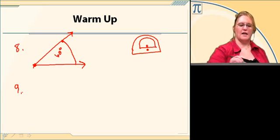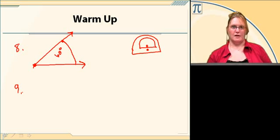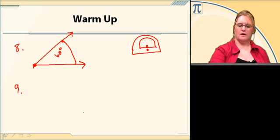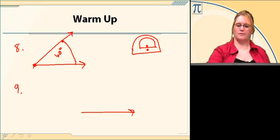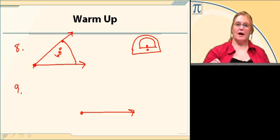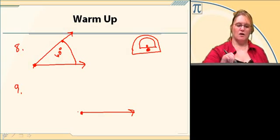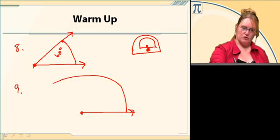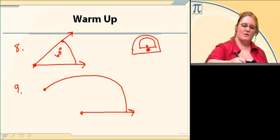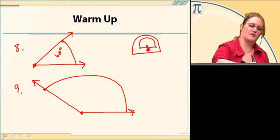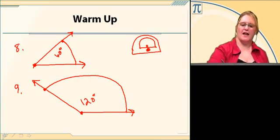Number nine says to construct a 120 degree angle. So again, draw your line. At the beginning of our line, I put a point, and that's where our protractor needs to go — this part at the bottom, where it's a center or raised area or circle, needs to go on the point on our line. Then we follow the curve around until we get to 120 degrees and put a point. Then we connect our two points with a line, and there's our 120 degree angle.